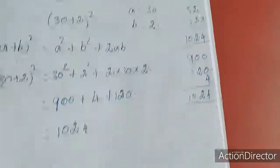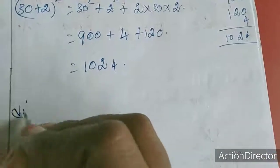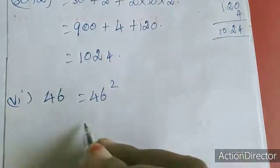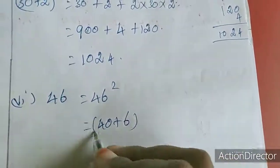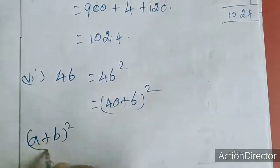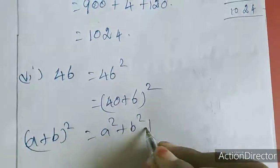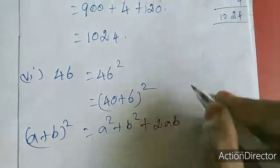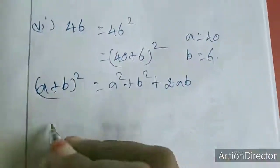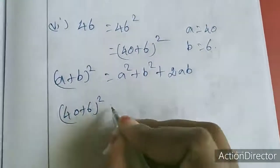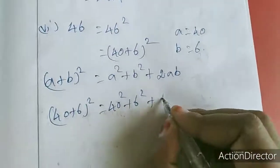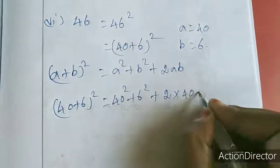Now last sum. Last sum is 46. For 46 square we want to find out. I am writing 40 plus 6 the whole square. So a plus b the whole square, a square plus b square plus 2ab, a equal to 40, b equal to 6. So 40 plus 6 the whole square equal to 40 square plus 6 square plus 2 into 40 into 6.